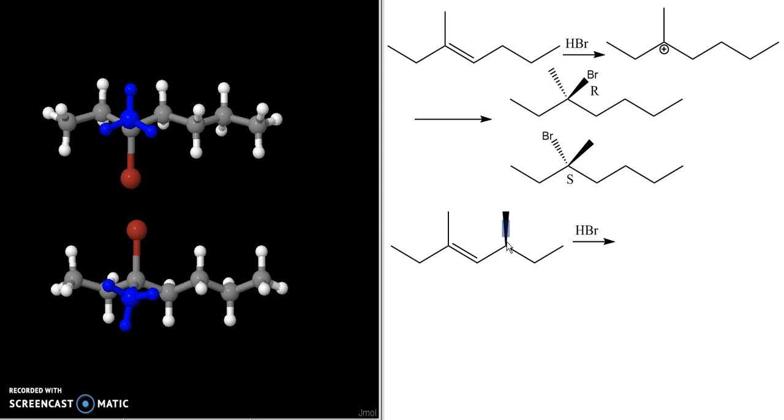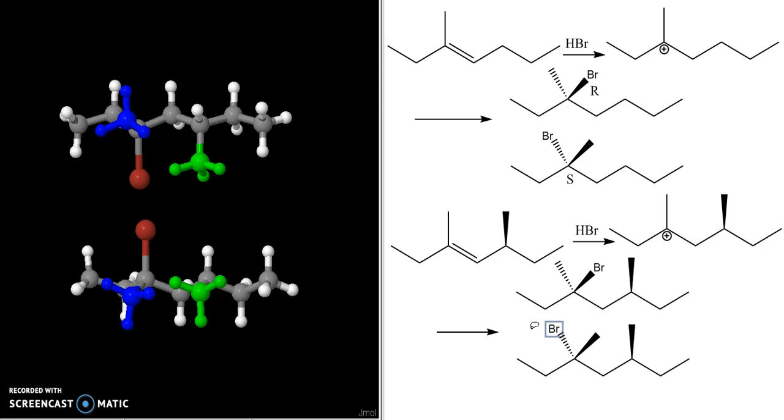Reaction is going to proceed the same way, giving me a very similar carbocation. And again, the Br can attack that carbocation, giving me a mixture of these two possible products. And we can look at three-dimensional models of these two.